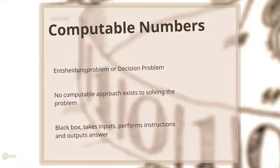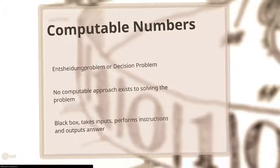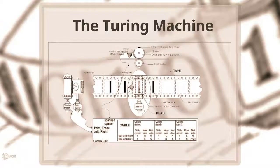A black box or computer was envisioned that takes in inputs, performs instructions and outputs an answer. A black box is the core concept of where the Turing machine comes from.